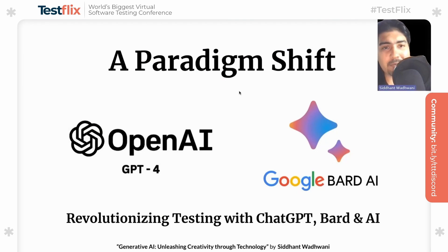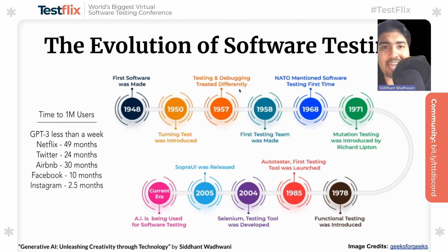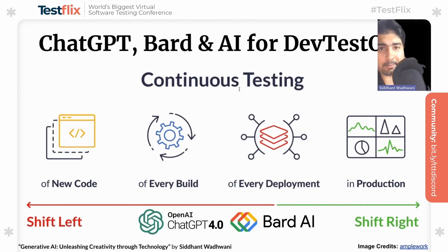ChatGPT and BARD AI have been revolutionizing the software testing field, and we've been witnessing a paradigm shift since the evolution of software testing. Software testing has been around for decades, dating back to early computing when programmers manually tested code for errors and bugs. With the rise of digital transformation and new technologies, AI and ML can now be leveraged to transform how we approach software testing — helping identify defects earlier, improve test coverage, and deliver high-quality software faster. ChatGPT and BARD can support continuous testing by providing real-time feedback on test results, shifting left or right, and suggesting optimizations for test cases.